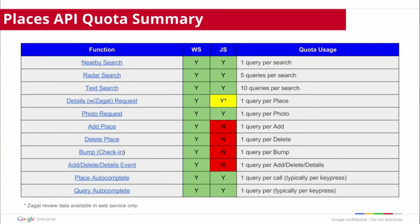I can explain a little bit more about how we count quota for the Places API. Essentially, every request to the Places API counts as a query against that 100,000 per day quota limit, or whatever you've negotiated as part of your business license. There are a few exceptions. For a normal search, that counts as one request. But we also have a radar search and a text search, which are different types of searches you can do. A radar search brings in a lot more results. A text search allows you to perform more of a natural language type of query, like 'pizza in New York.' Those count as five or ten queries each — a little bit more than a standard search.